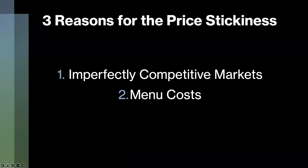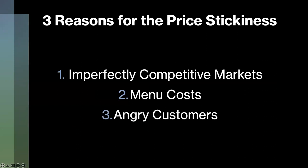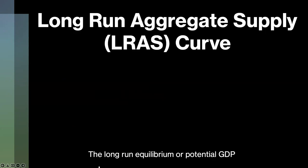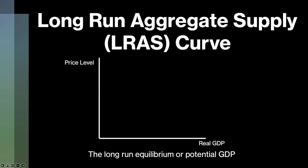And finally, people get angry when things get more expensive, but don't seem upset when things are less expensive. Therefore, businesses keep prices more stable in the short run so that customers know what to expect and will continue shopping there. Finally, we have the long-run aggregate supply curve, which is where real GDP equals the potential GDP and the business cycle is at equilibrium. This occurs when prices are flexible, creating a vertical line.